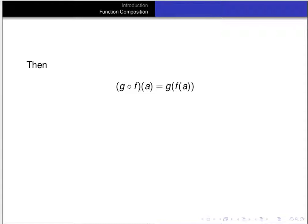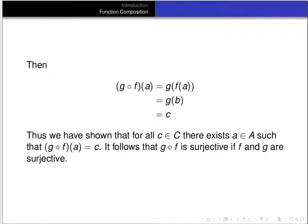Now we've chosen a and b appropriately, so we can compute the composition: g ∘ f(a) = g(f(a)) = g(b) = c. So for all c in C, there exists a in A such that g ∘ f(a) = c. It follows that g ∘ f is surjective when f and g are surjective.